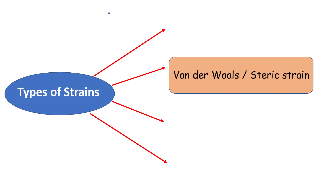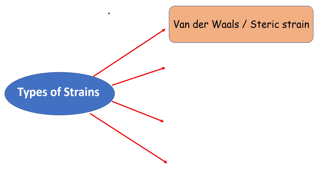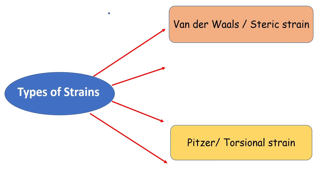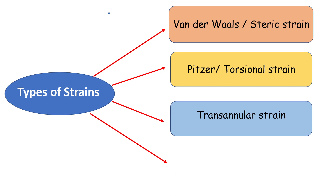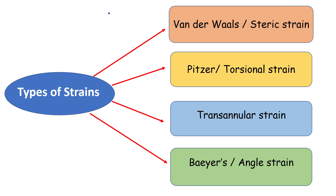There are basically four types of strains in a molecule: Van der Waals or steric strain, Pitzer or torsional strain, transannular strain, and Baeyer strain or angle strain.